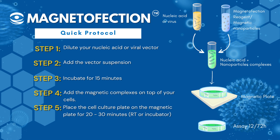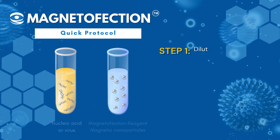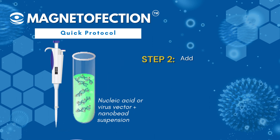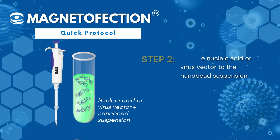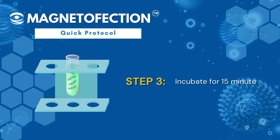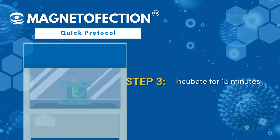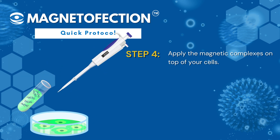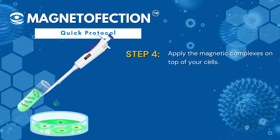The MagnetInfection protocol is very straightforward and is an easy procedure that consists of only 5 steps. Step 1: dilute your nucleic acid or viral vector. Step 2: add the nucleic acid or virus vector to the nanobead suspension. Step 3: incubate for 15 minutes. Step 4: apply the magnetic complexes on top of your cells.